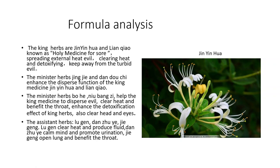There are three adjuvant herbs: Lu Gen, Dan Zhu Ye, and Jie Geng. Lu Gen clears heat and produces fluid, taking care of warm and heat pathogens that easily injure fluid. Dan Zhu Ye clears the heart and benefits the water pathway, making heat toxin drain through urine; its heat-clearing function can protect the spirit-mind from being hurt by evil heat. Jie Geng disperses the lung and stops cough; paired with Sheng Gan Cao, it also benefits the throat. The school of warm-febrile disease emphasizes letting heat exit the body, so in Yinqiao San we use the dispersing function and promoting urination method to help heat go out.